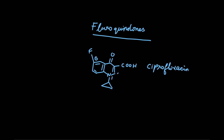The numbering: Nitrogen gets number one, then two, three, four, five, six, seven, and eight. And there is a Piperazine ring in the seventh position. This is the Piperazine ring attached in the seventh position.